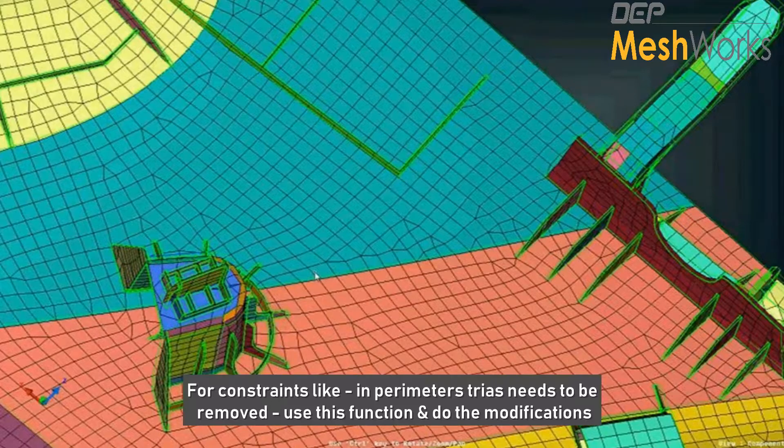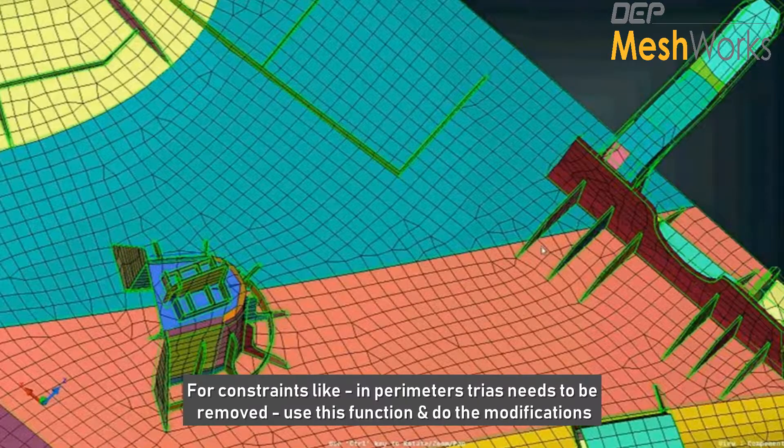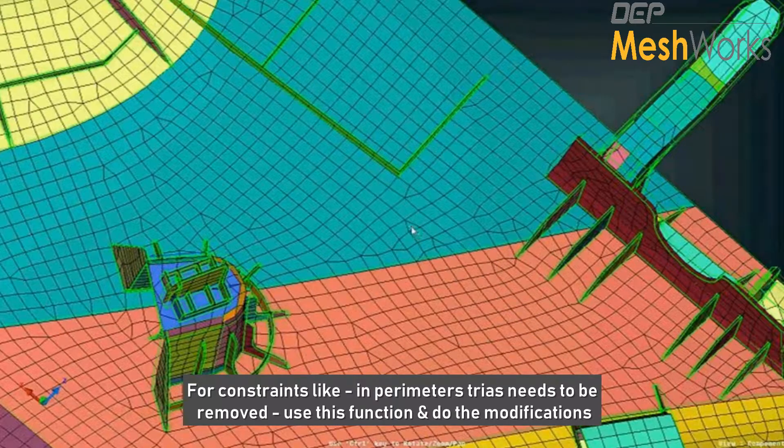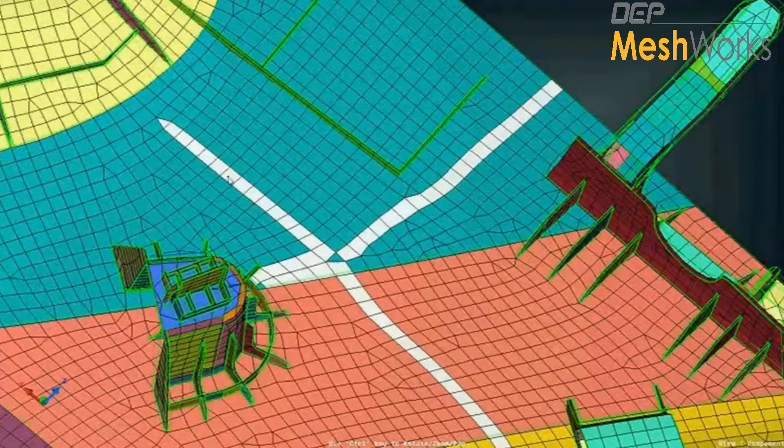So if there is a constraint that on all the perimeters or the surfaces there should not be any kind of trias, users can quickly do all the modifications using this function.